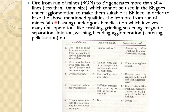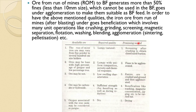In order to achieve the above-mentioned quality, the iron ore from run of mines undergoes beneficiation, which involves many unit operations like crushing, grinding, screening, magnetic separation, flotation, washing, blending, and agglomeration. This table shows the available ore, the required quality, and what processing is needed to reach that required quality.